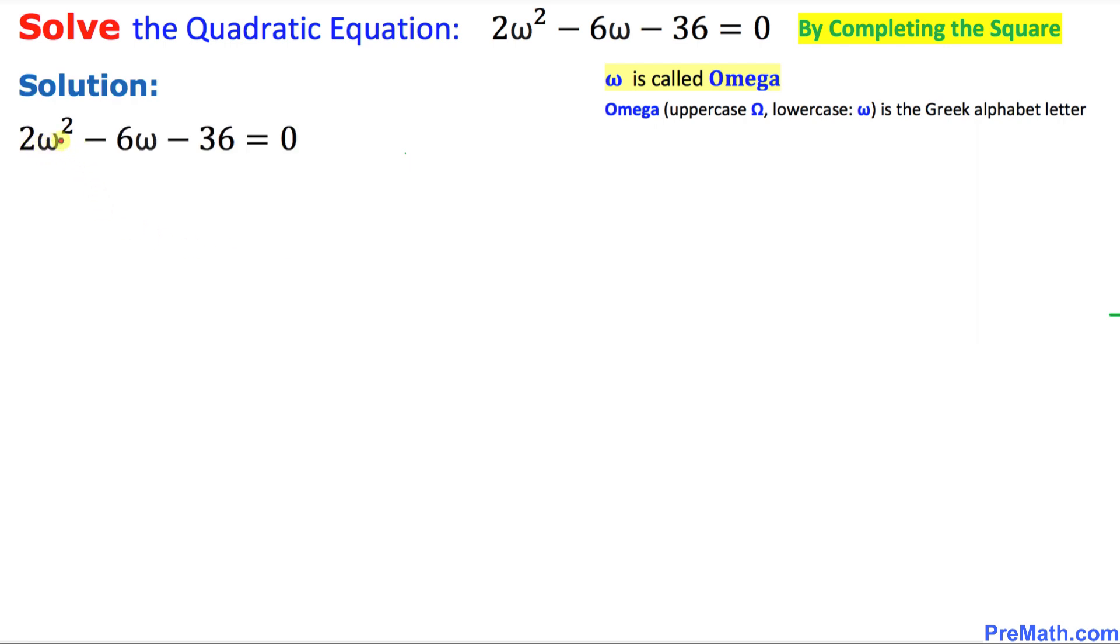First of all, let's look at this given quadratic equation right up here. As we can see, this equation is easily divisible by 2 across the board. So let me go ahead and divide each and every term by 2.